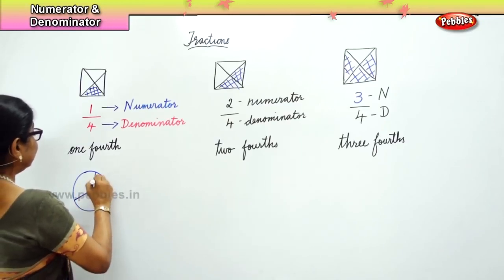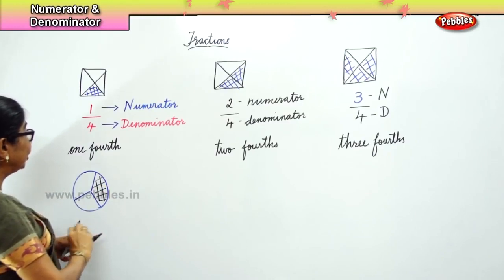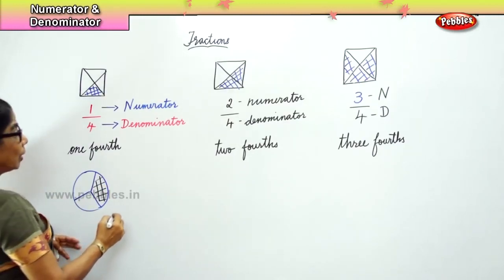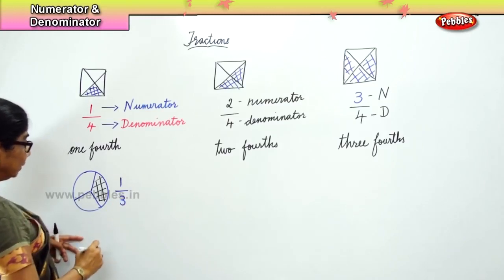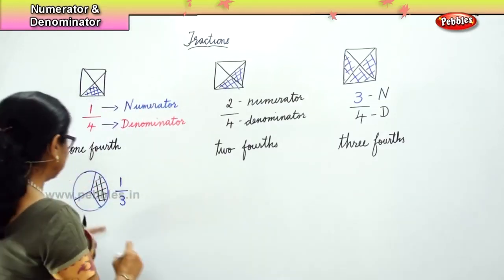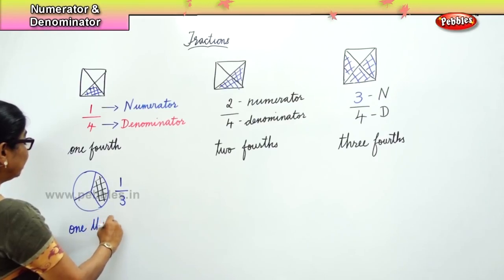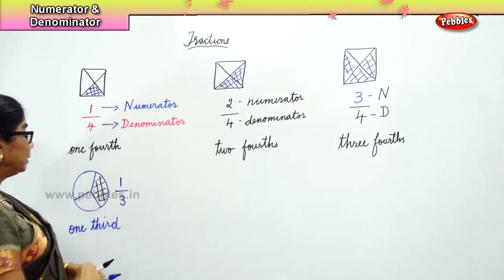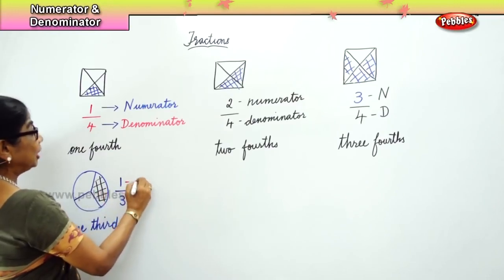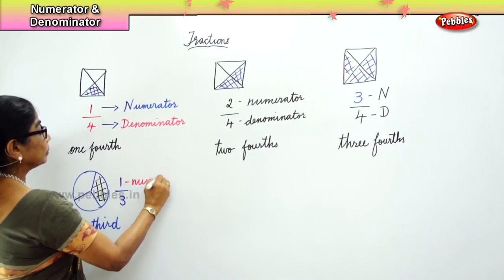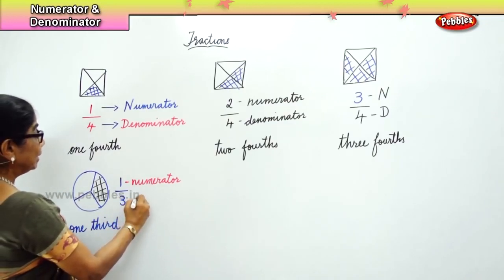Here I shaded one portion and we have been dividing it into 3 parts, so you write it as 1 part out of 3 parts. That is, we write it as one third, because only one part out of three is shaded. We say the 1 is the numerator and the 3 is the denominator.